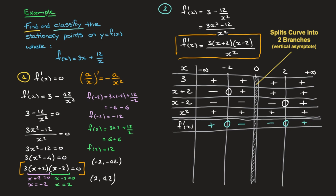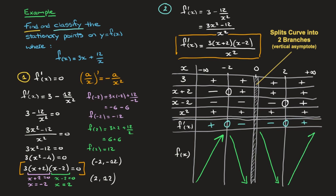We now know the sign of the derivative for all x-values in the domain. I add a final tall row showing what f(x) does. Where f'(x) is positive, f(x) is increasing, so I draw an upward arrow. Where f'(x) is negative, f(x) is decreasing, so I draw a downward arrow. The pattern is: arrow up, arrow down, arrow down, arrow up.